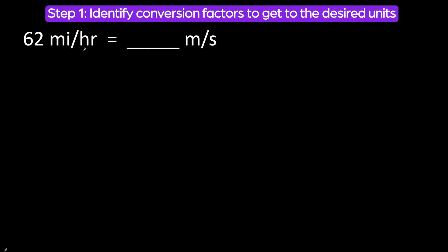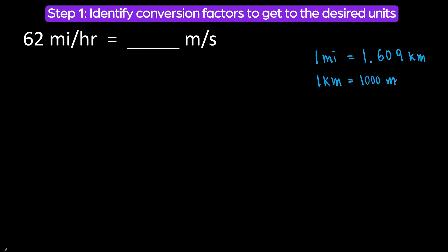We need to change 62 miles per hour to meters per second. Let's identify conversion factors that will help us change miles to meters. We can use this one: one mile is equal to 1.609 kilometers. I know it's kilometers, not meters, but we can go from kilometers to meters because one kilometer is equal to 1,000 meters. So first we will change miles to kilometers, and then to meters.